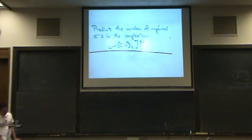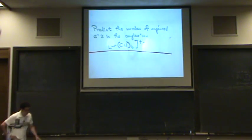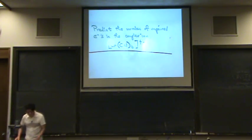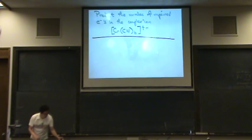So that would make it hexacyanochromium 2 ion. Okay, so we want to find the number of unpaired electrons. Let's do this a try.